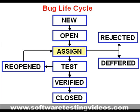Once the lead changes the state to open, he assigns the bug to the corresponding developer team. The state of the bug is now changed to assigned. Once the developer fixes the bug, he assigns the bug to the testing team for the next round of testing. He then changes the state of the bug to test, specifying that the bug has been fixed and released to the testing team.